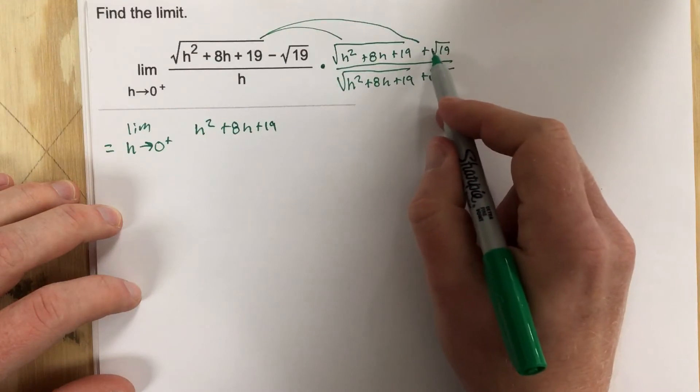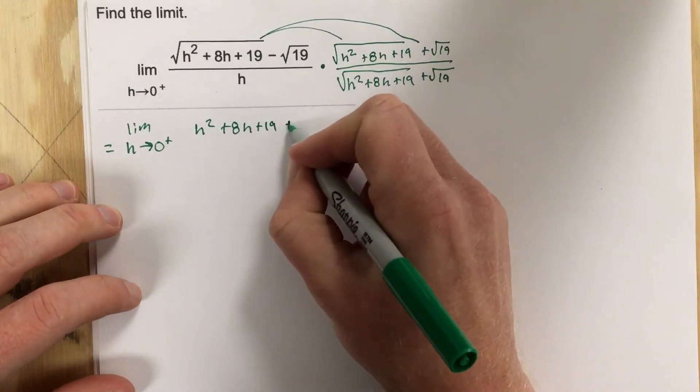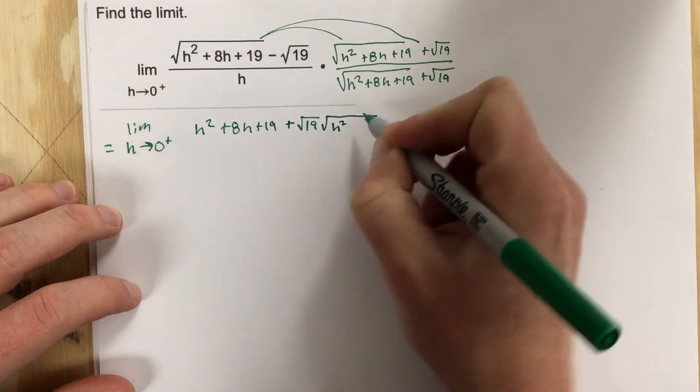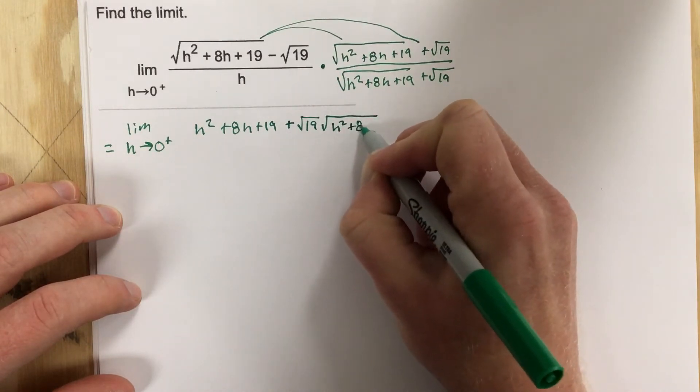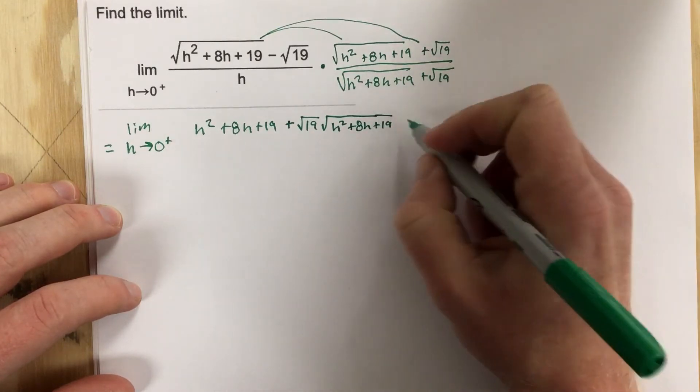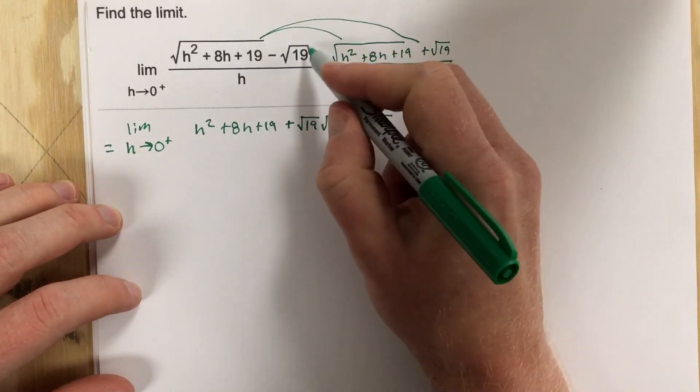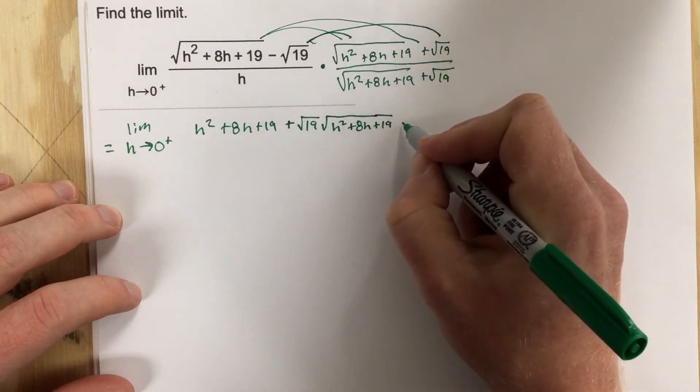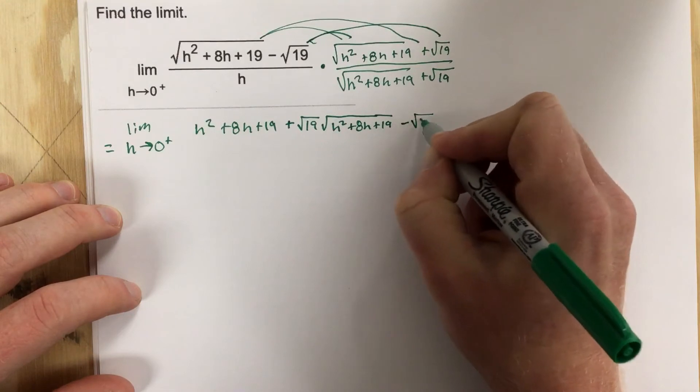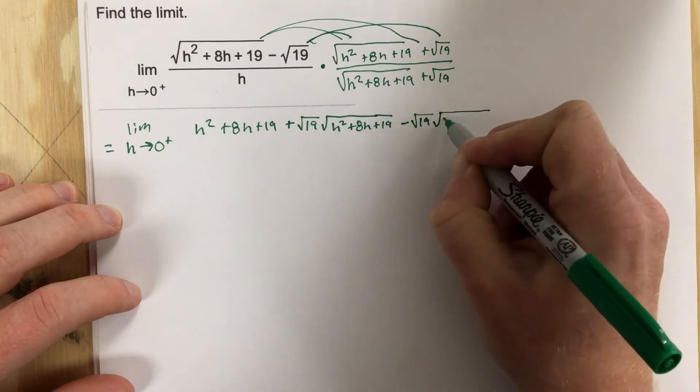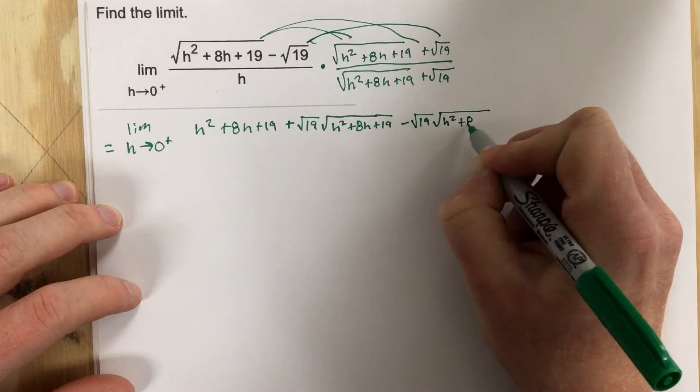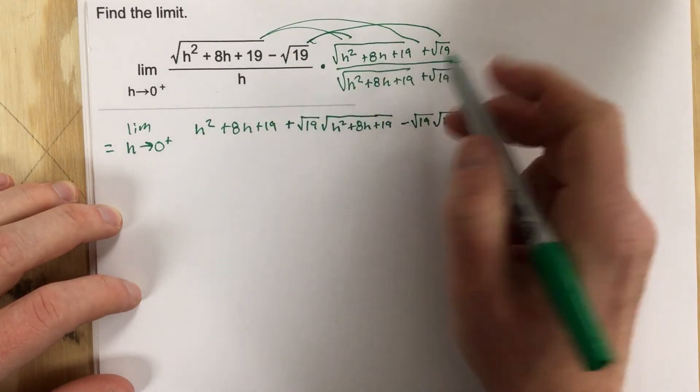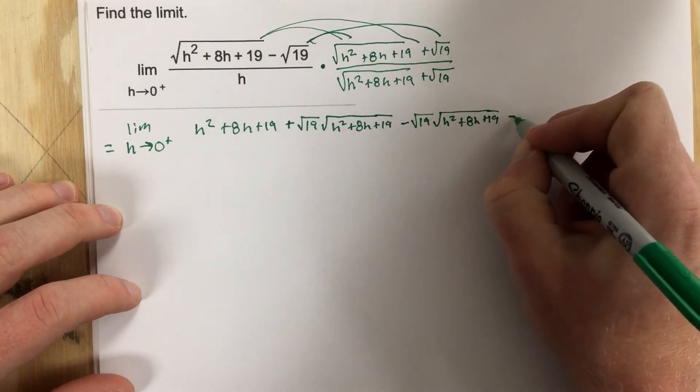Because the radicals cancel when I multiply this one times the positive root 19 I end up with plus root 19 root h squared plus 8h plus 19. When I multiply the negative 19 now times each term I end up with a negative root 19 times root 19 that's just going to give you 19 so it's minus 19.